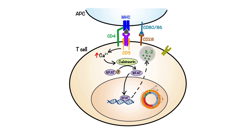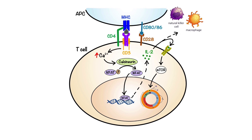Generated interleukin-2 binds to the interleukin-2 receptors on the surface of T cells, activating a signaling protein called mammalian target of rapamycin, mTOR for short, thereby allowing the cell to progress through the cell cycle, promoting cell proliferation of antigen-primed T cells, which subsequently produce more interleukin-2 as well as other pro-inflammatory cytokines, activating natural killer cells, macrophages, and cytotoxic T cells.